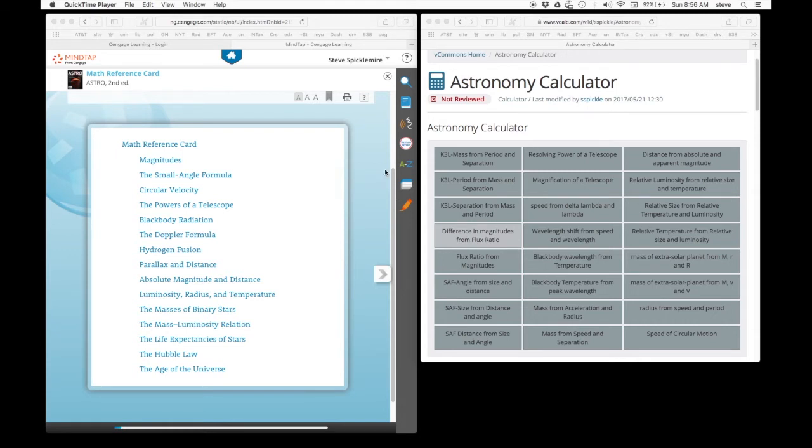Hi guys, I just wanted to point out that I have added a bunch of options to the astronomy calculator. These three, the Kepler's third law functions are still there, the difference in magnitudes from flux ratio and flux ratio from magnitudes are still there.